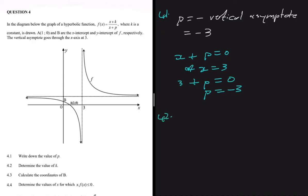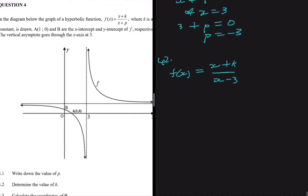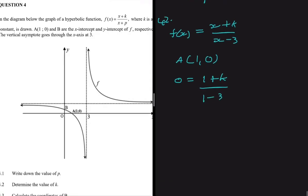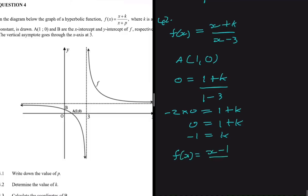Question 4.2 asks us to determine the value of k. We know f of x equals x plus k divided by x plus p, and since p is minus 3, the denominator becomes x minus 3. We substitute the coordinates of A, which has x equals 1 and y equals 0: 0 equals 1 plus k divided by 1 minus 3. Cross-multiplying gives 0 equals 1 plus k, so k equals minus 1. Our equation is now f of x equals x minus 1 divided by x minus 3.